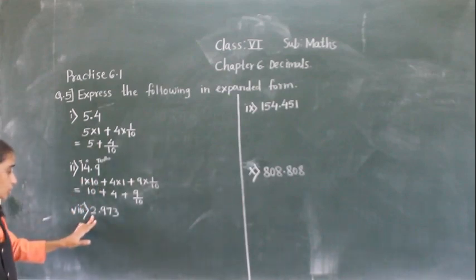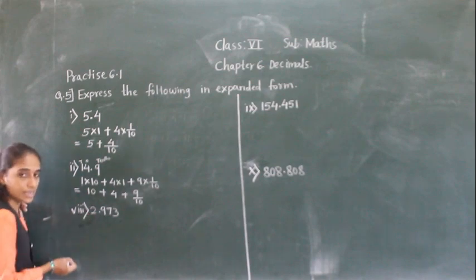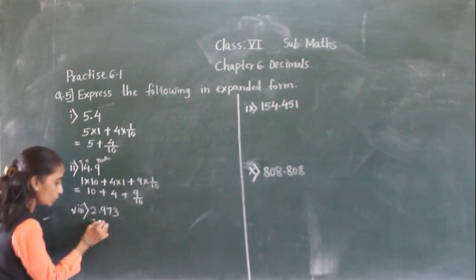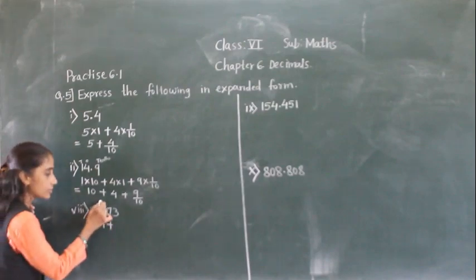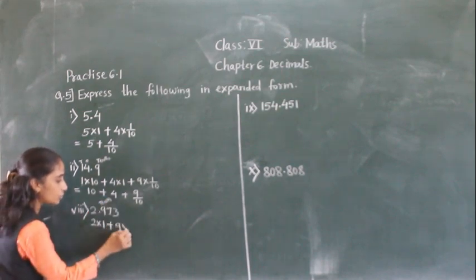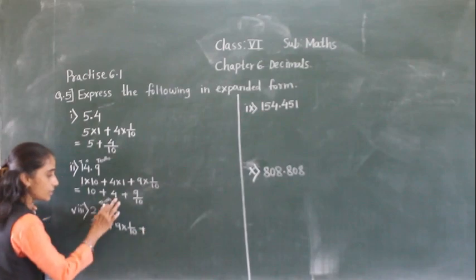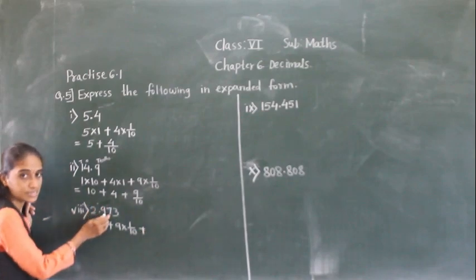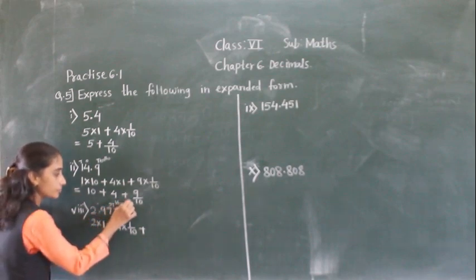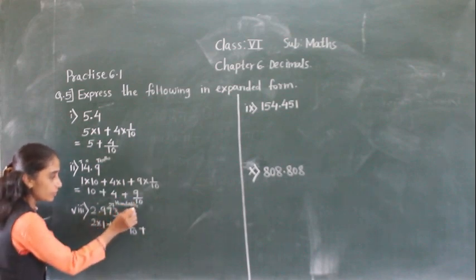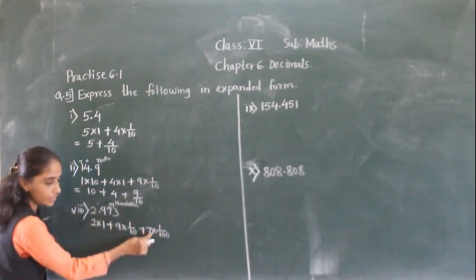Next number: question 2 — 2.973. Now 2 is at the ones place, so 2 into 1. Plus 9 is at which place? 9 is at the 10th place, so 9 into 1 upon 10. Plus now 7 is at which place? 7 is at the 100th place, so 7 into 1 upon 100.